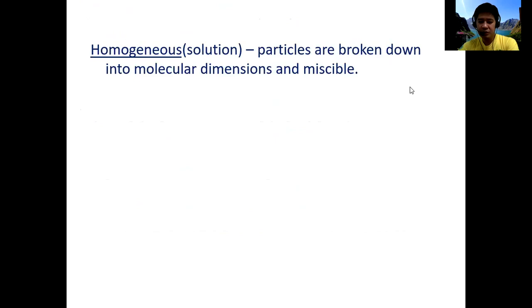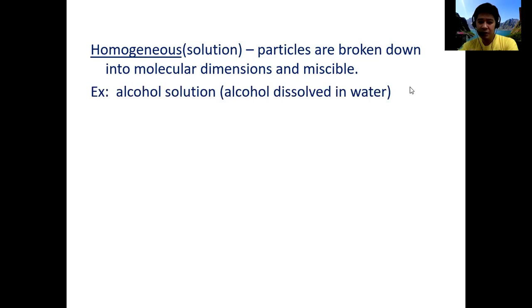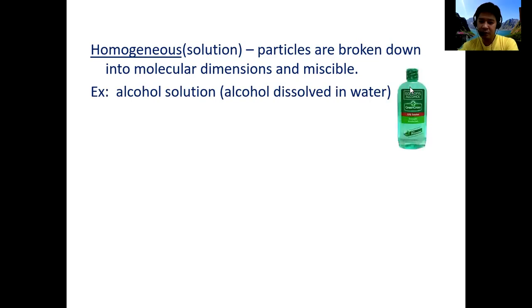Homogeneous mixtures, sometimes also known as solutions, are mixtures where particles are broken down into molecular dimensions and are uniform in appearance. For example, an alcohol solution — when alcohol is dissolved in water, you cannot identify which is the alcohol and which is water because they are miscible. Commercially available isopropyl alcohol is a 70% solution, meaning it is 70% pure alcohol and 30% water.